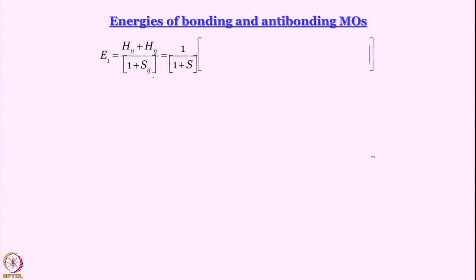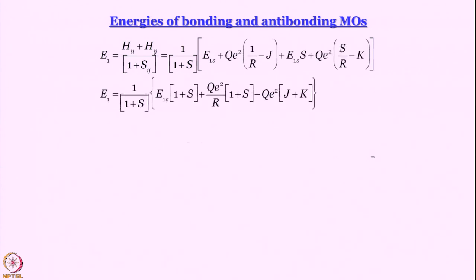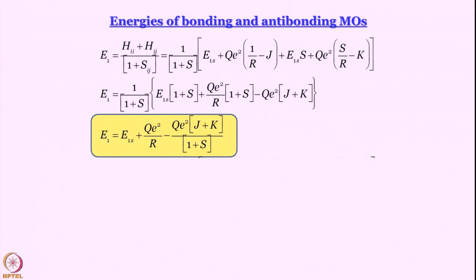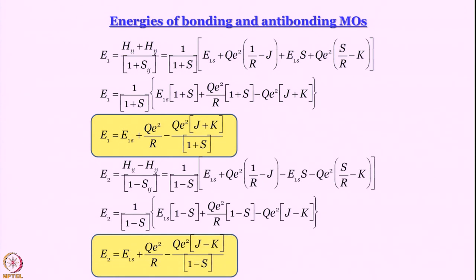We now substitute the expressions for H_ii and H_ij into E_1 and E_2. E_1 includes E_1s plus q_e squared by capital R, and the term involving J and K. E_2 has the same structure but with minus signs. The term q_e squared by capital R appears in both E_1 and E_2 — that is the internuclear repulsion. If R is very large, this term approaches zero; if they are very close, it becomes very large.